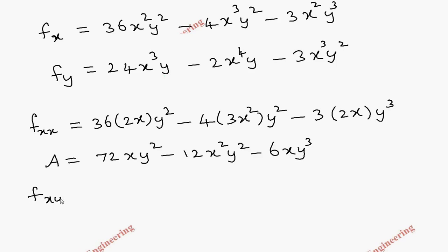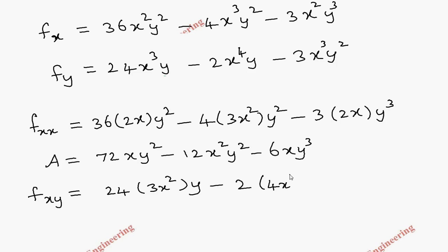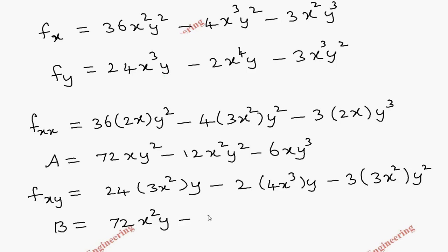For fxy, we differentiate fy = 24x³y - 2x⁴y - 3x³y² with respect to x: 24 · 3x² · y - 2 · 4x³ · y - 3 · 3x² · y². This gives fxy = 72x²y - 8x³y - 9x²y². This is our value b.